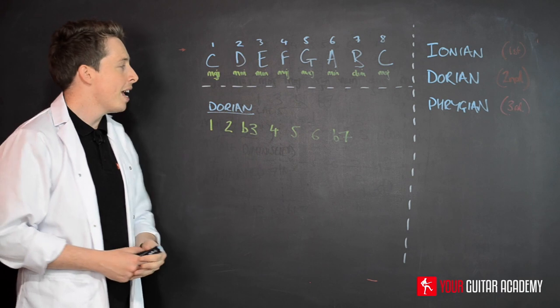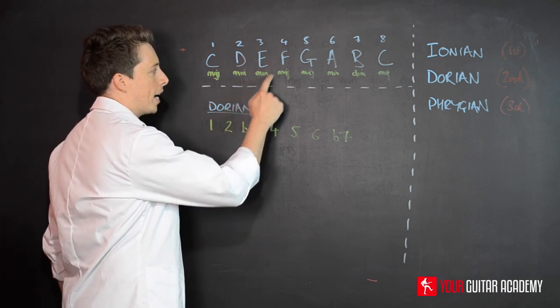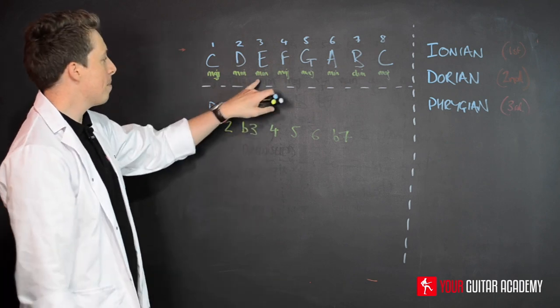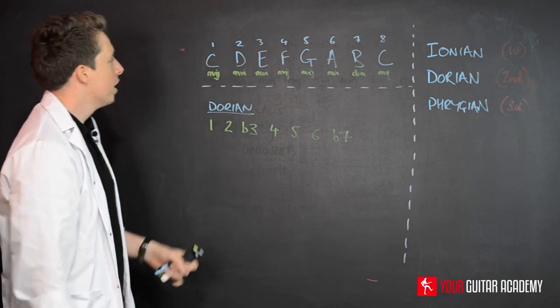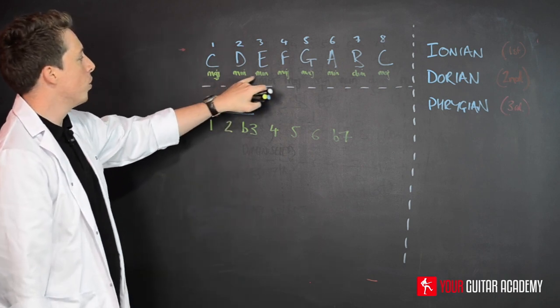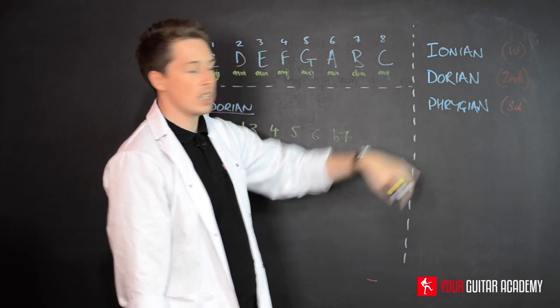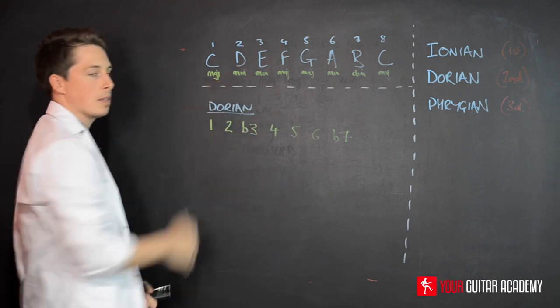It should, crucially, sound quite minor - it should be a minor mode. That means it should sound a little dark, a little edgy maybe. So we now have two minor modes. We know the Dorian was based on a minor, the Phrygian is based on a minor, and that original Ionian is based on the major.